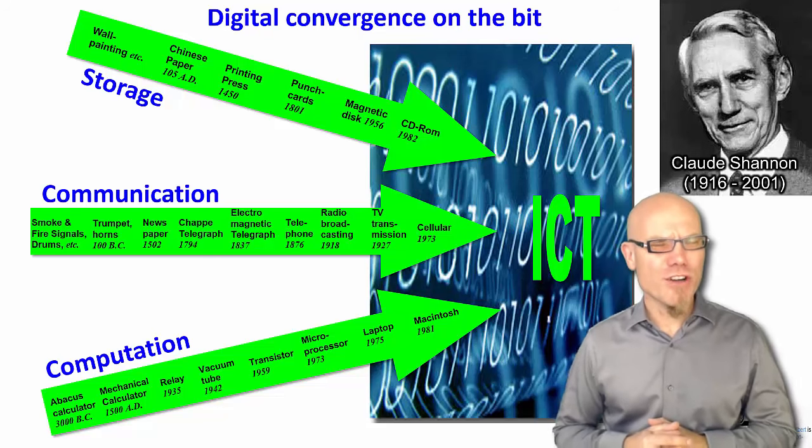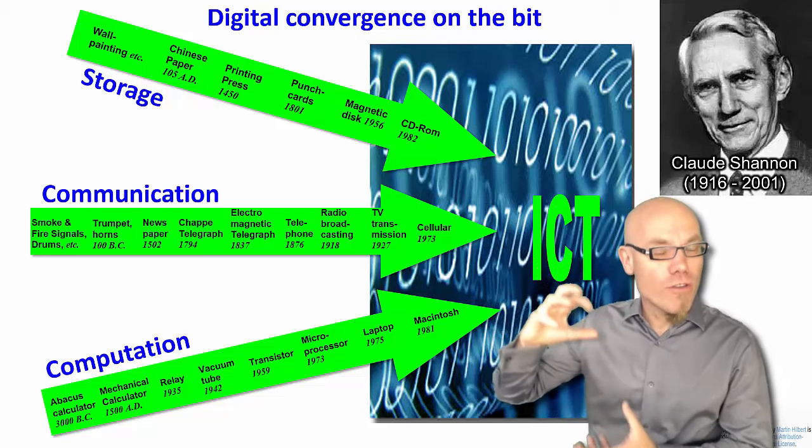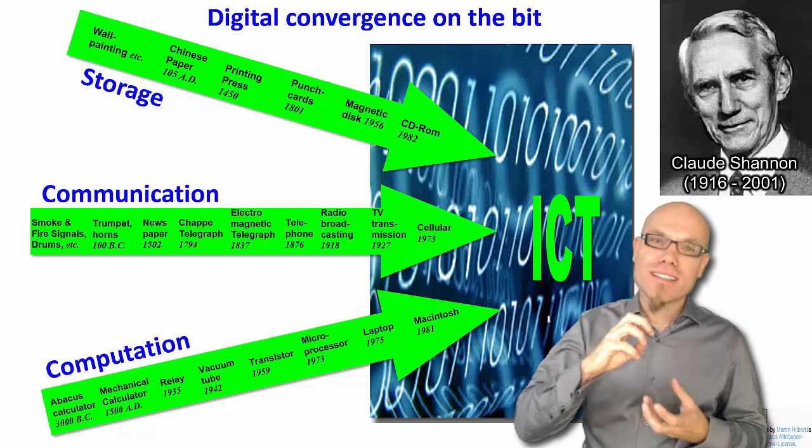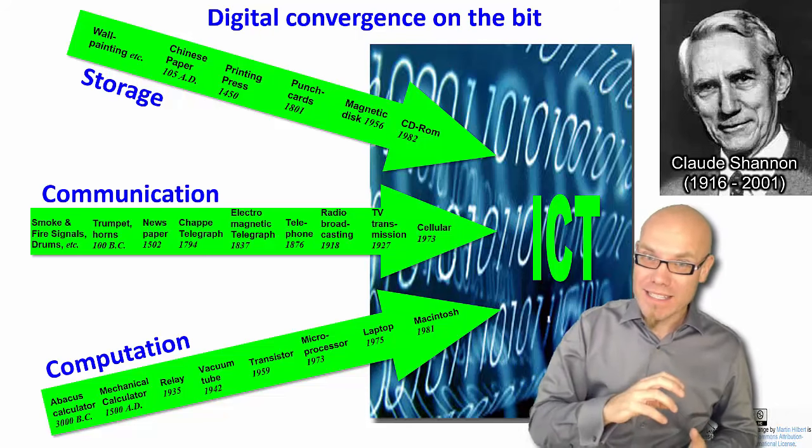The digital age is made possible because previously separate technological trajectories converge on the digital paradigm, on the digit, on the binary digit, on the bit.